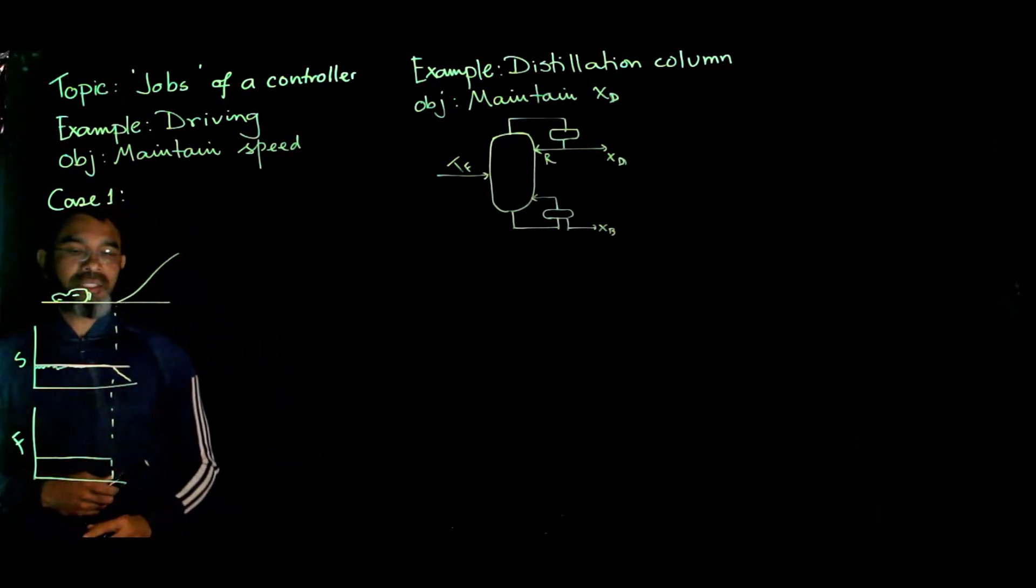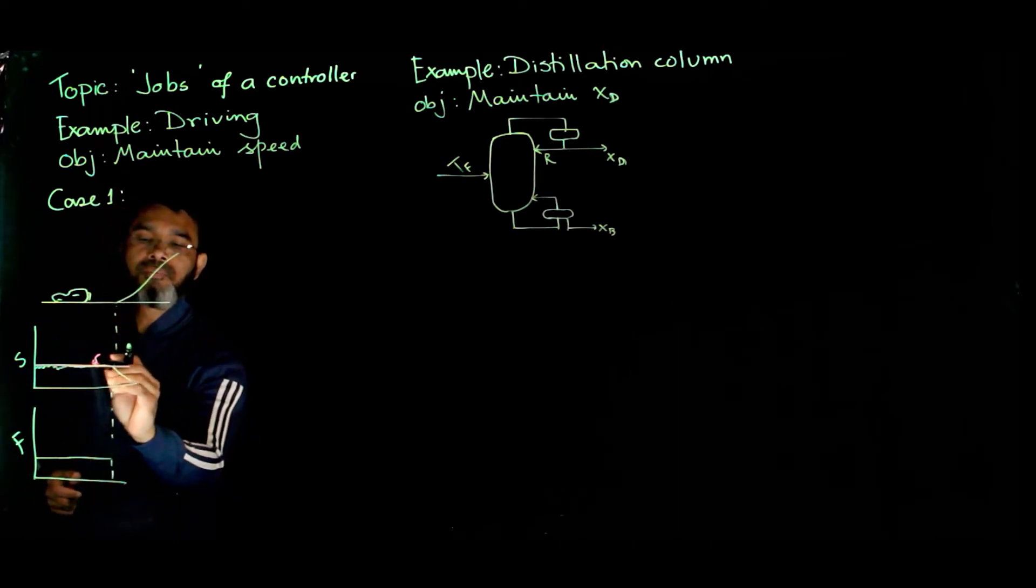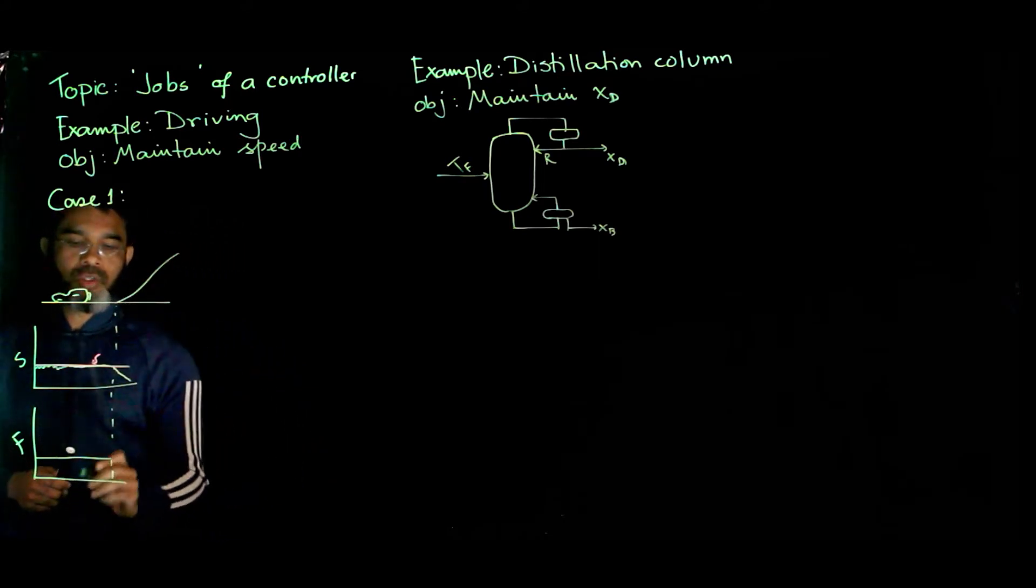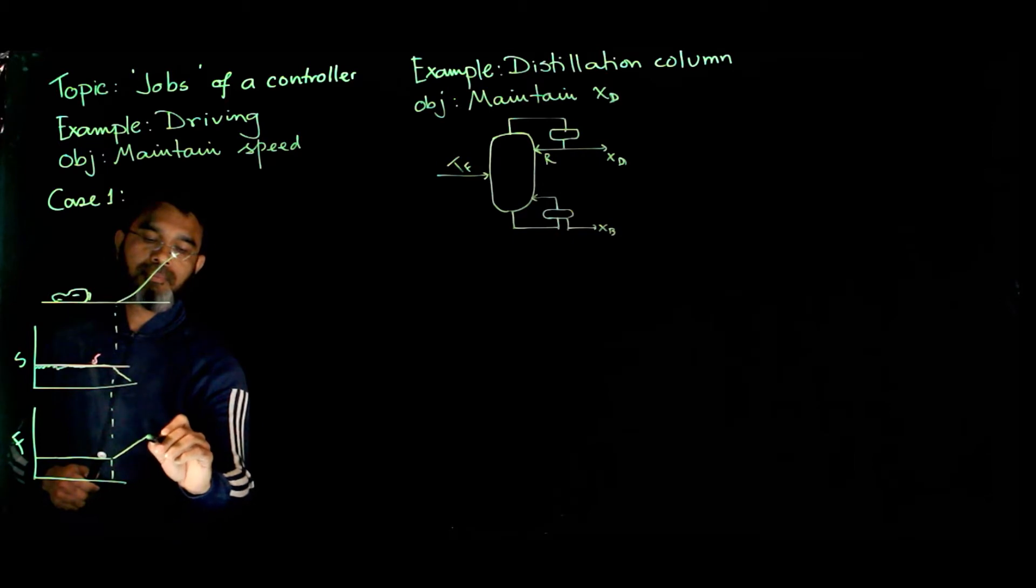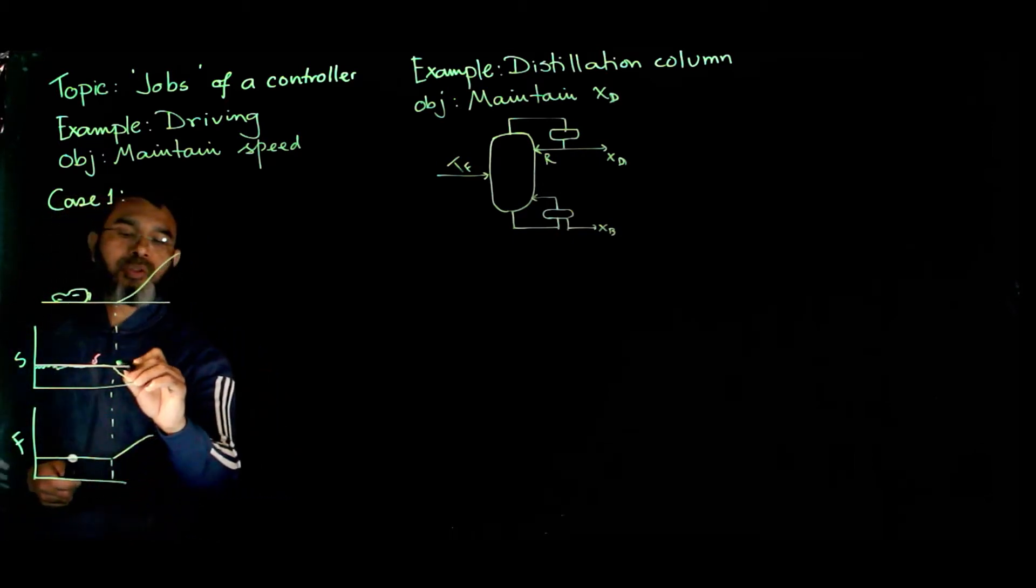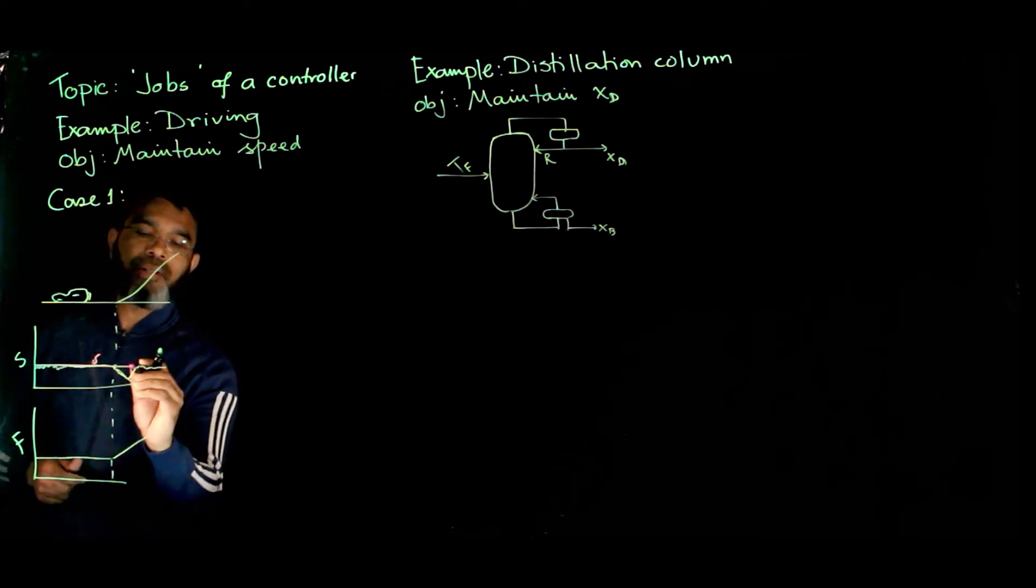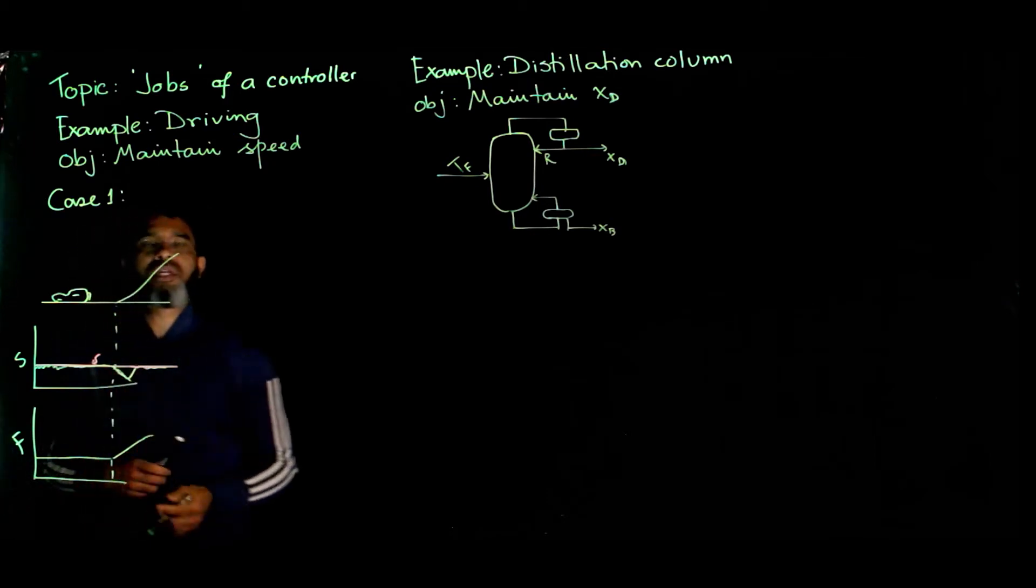If you do not want that, if you still want to maintain the speed at the desired value, what you have to do is change the gas flow. With the change in elevation, you'll have to change gas flow so that will allow you to keep the speed at the desired value. It may change by some value because of feedback control and come back to the desired value, and you'll be able to maintain the speed.